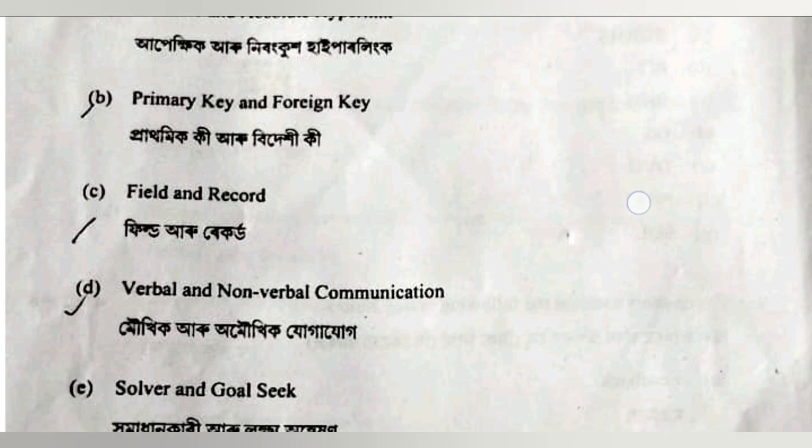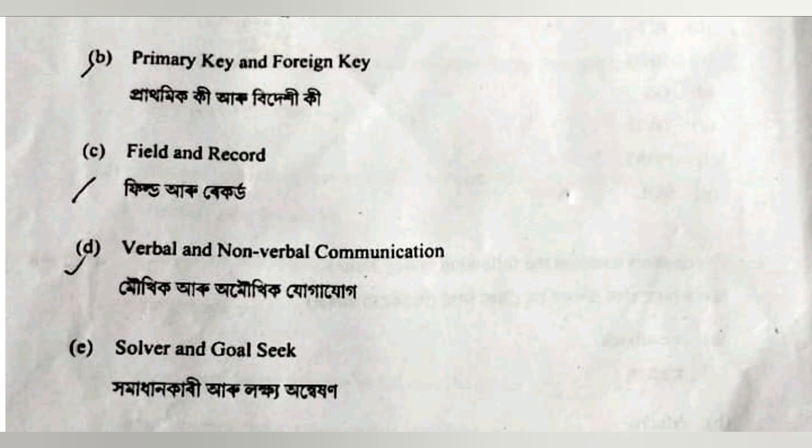Primary key and foreign key: a primary key uniquely identifies each row in a table, and a foreign key is used to relate one table with another table. Field and record: a complete set of columns is called a field, and a complete set of rows is called a record. A field contains information about one particular attribute, and a record contains information about a particular row.